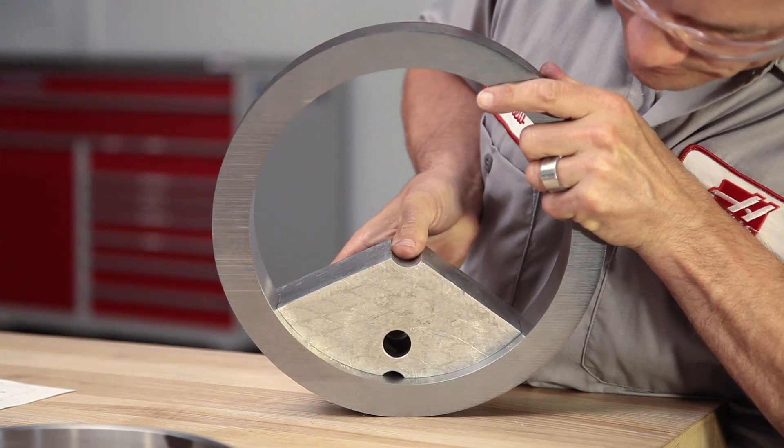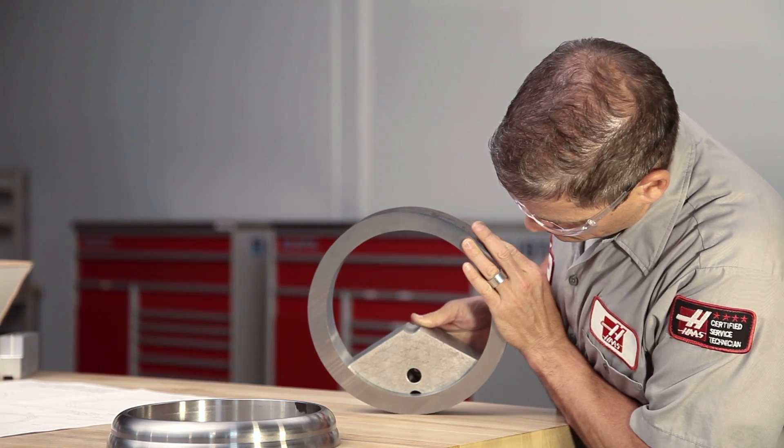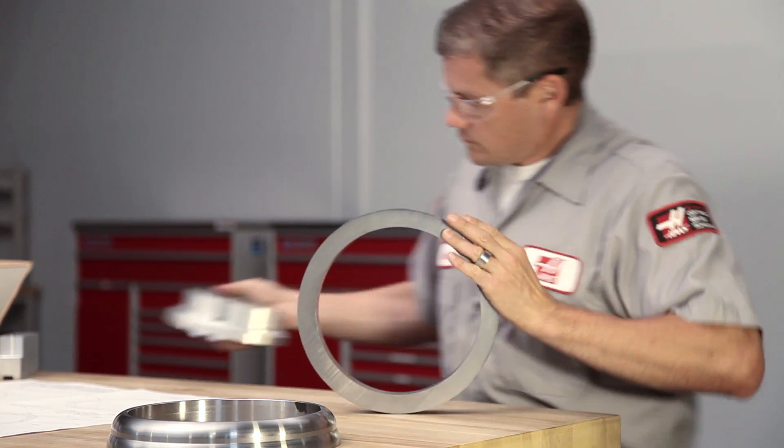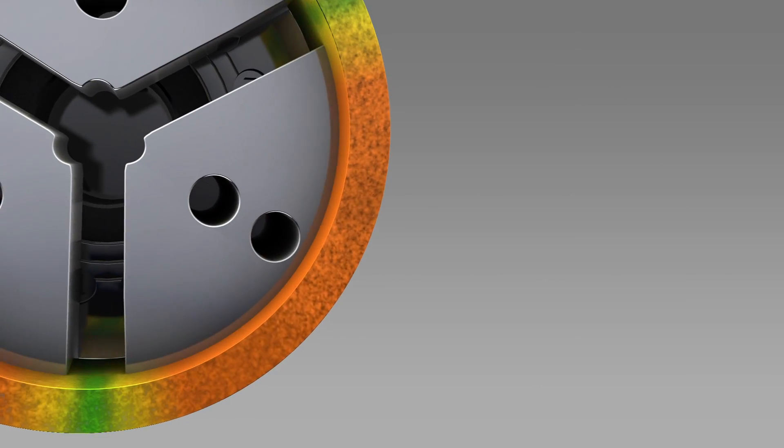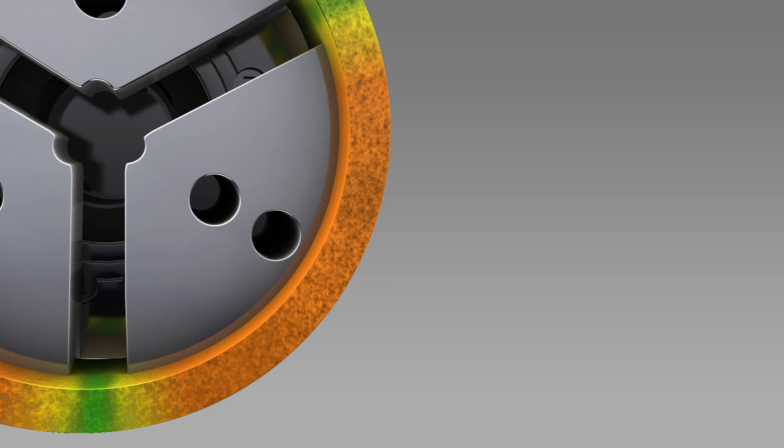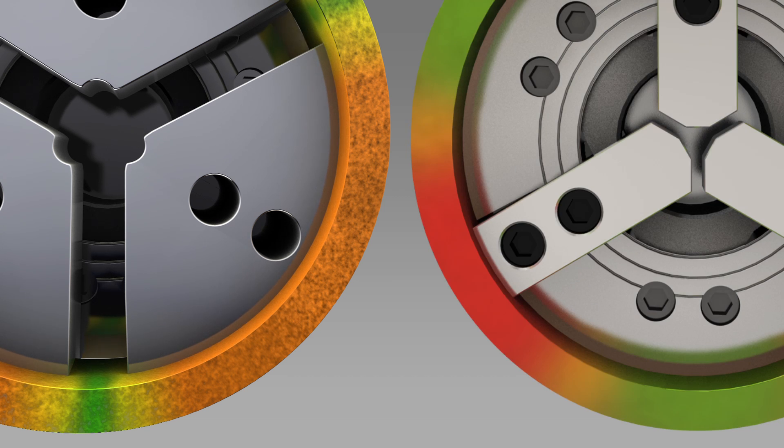Pie jaws are often used to hold thin wall parts that will deform easily without full support. As shown in this graphic, gripping force is distributed much more evenly over the surface area of our pie jaws than compared to a regular soft jaw.